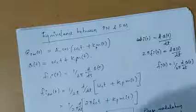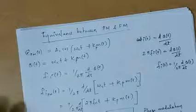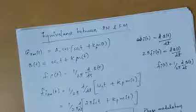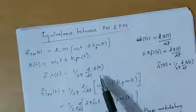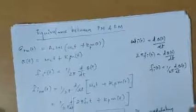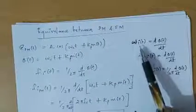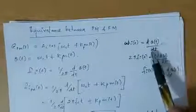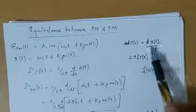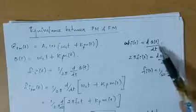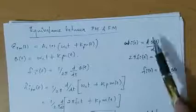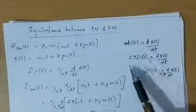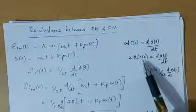If we find the instantaneous frequency of phase modulation, we get the following expression. We know that instantaneous angular velocity ω_i(t) can be represented as dθ(t)/dt, where θ(t) is the angular displacement. By differentiating the angular displacement we get angular velocity, and from that we can write ω_i(t) = 2π f_i(t).